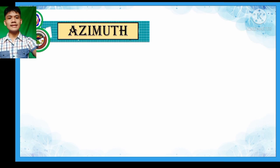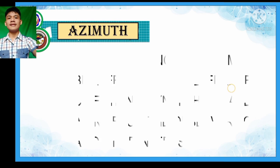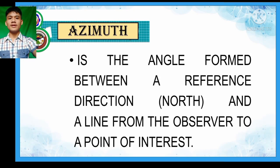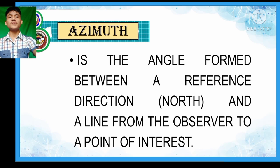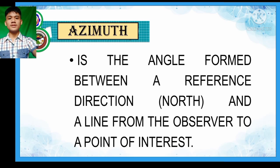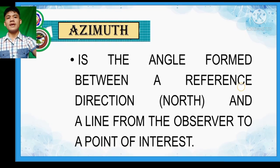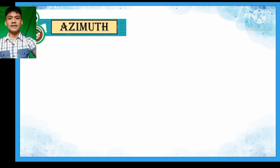So first, let us discuss or define what azimuth is. Azimuth is defined as the angle formed between a reference direction, which is the north, and a line from the observer to a point of interest. This definition can be illustrated by the following illustration.